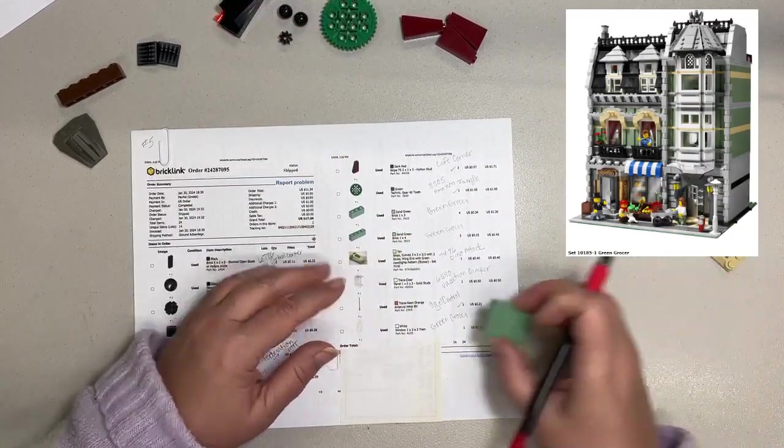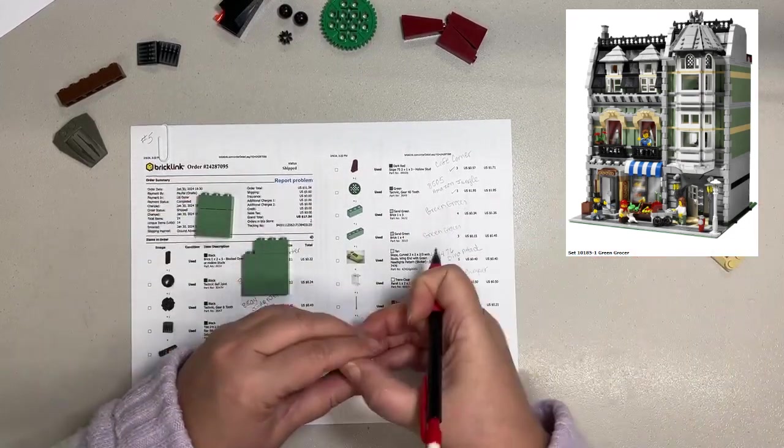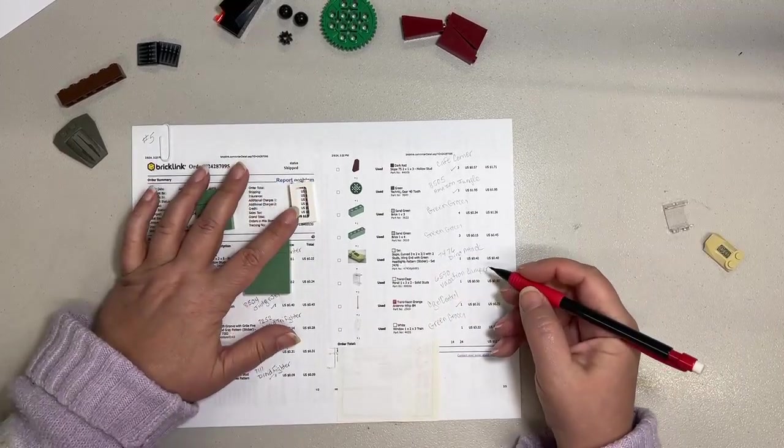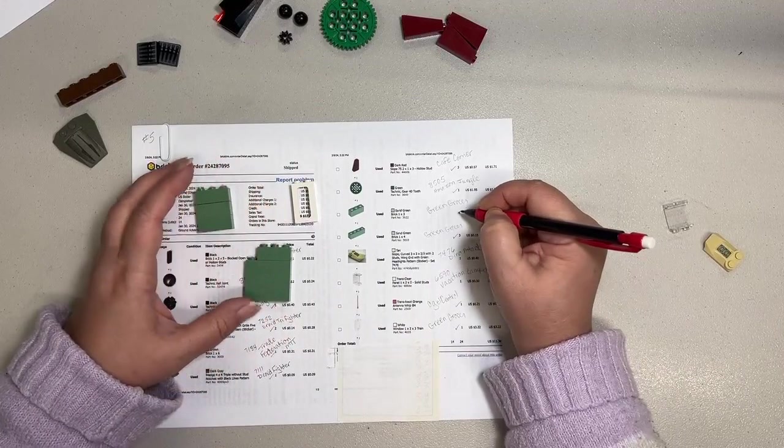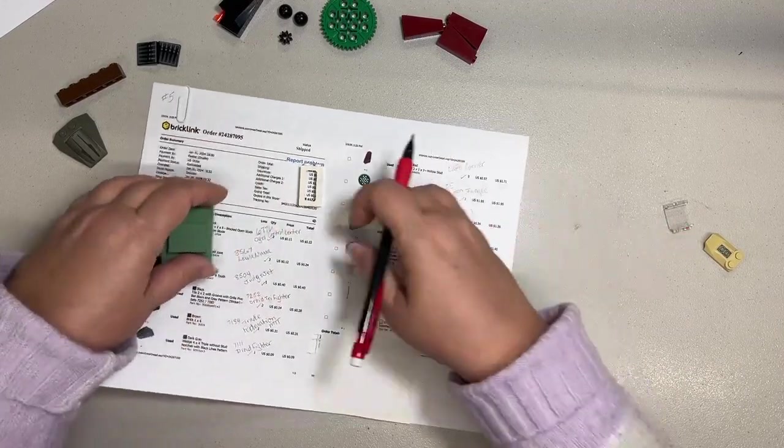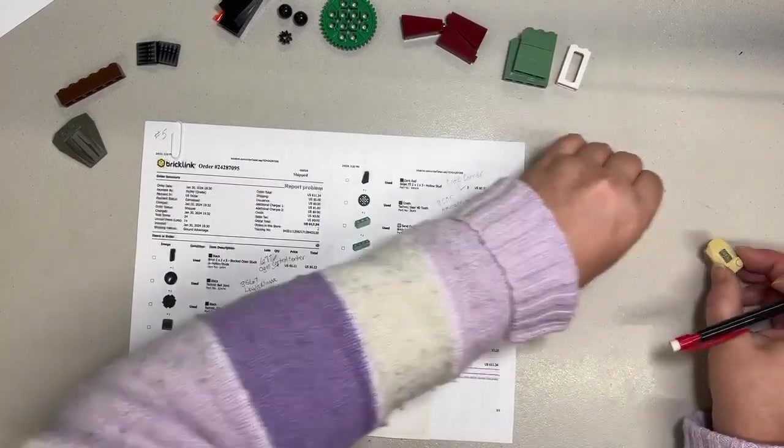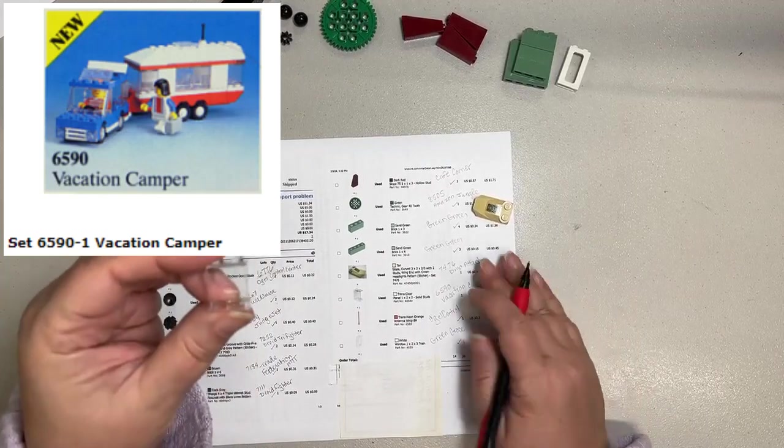And of course, I have parts for the Green Grocer. These parts here, the window and the bricks, and this finishes out my Vacation Camper.